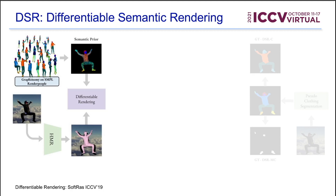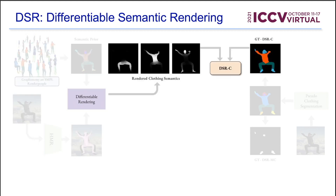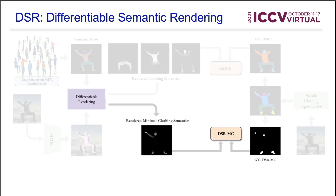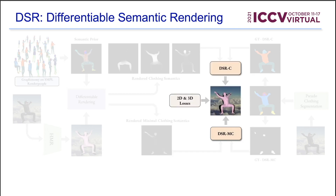The differentiable rendering has two components. The clothing component gives three rendered outputs: upper clothes, lower clothes, and non-clothing, and we use the DSRC loss for supervision. The minimal clothing component outputs the probability of clothing or minimal clothing for each body part, and we use the DSRMC loss for supervision. Finally, we combine DSRC, DSRMC, and standard 2D and 3D losses for training.